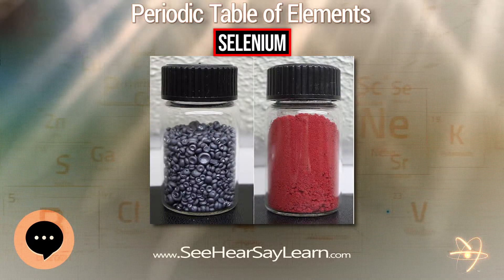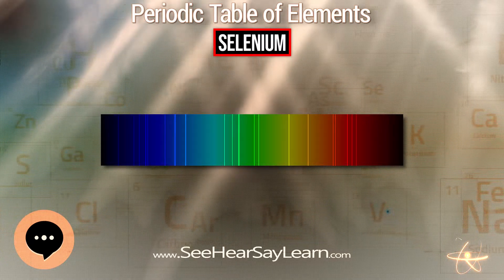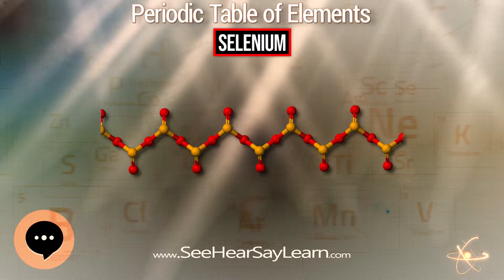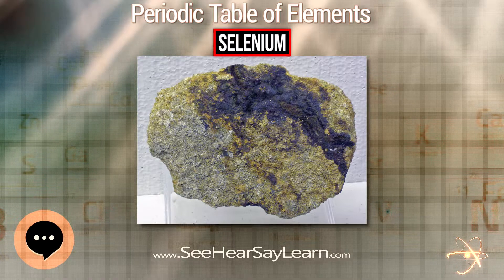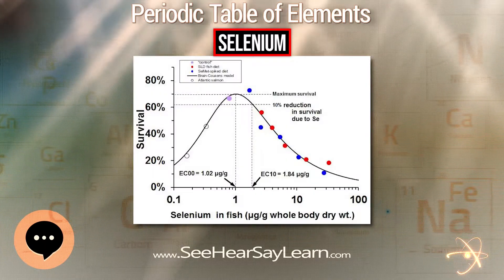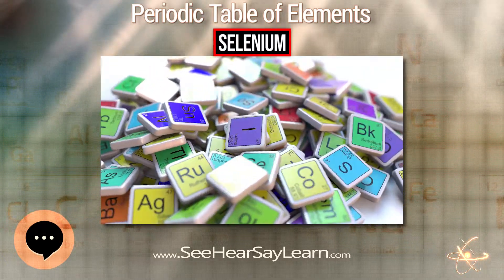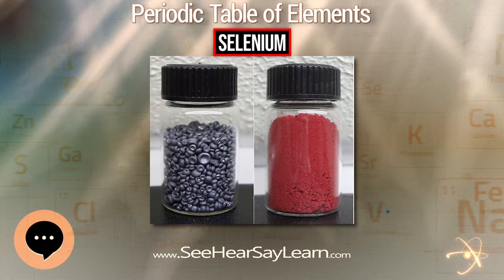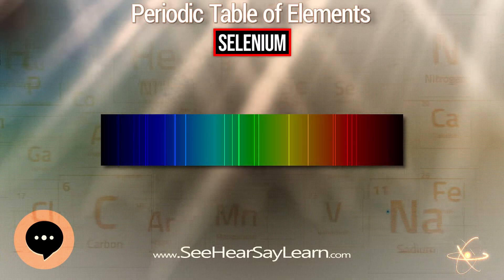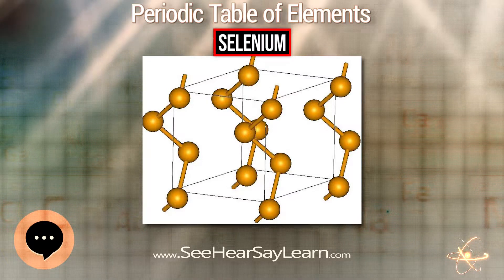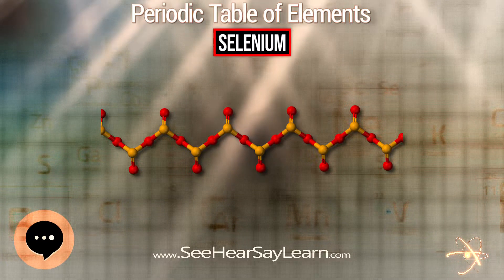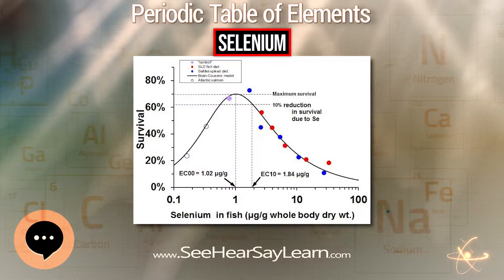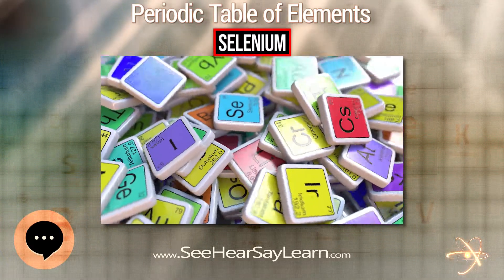Although it is toxic in large doses, selenium is an essential micronutrient for animals. In plants it occurs as a bystander mineral, sometimes in toxic proportions in forage. Selenium is a component of the unusual amino acids selenocysteine and selenomethionine. In humans, selenium is a trace element nutrient that functions as a cofactor for reduction of antioxidant enzymes such as glutathione peroxidases and certain forms of thioredoxin reductase found in animals and some plants. The glutathione peroxidase family of enzymes catalyze reactions that remove reactive oxygen species such as hydrogen peroxide and organic hydroperoxides.